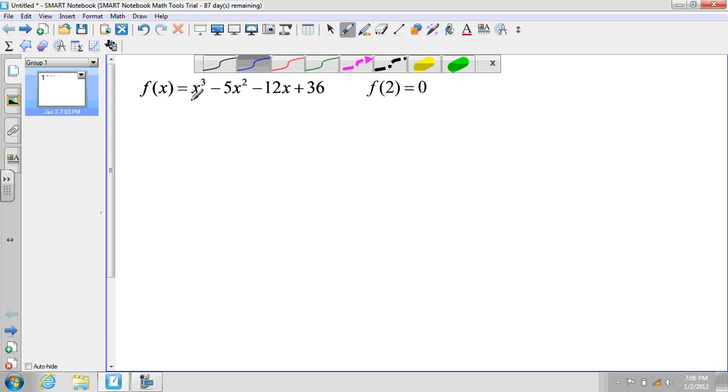So f(x) = x³ - 5x² - 12x + 36. They say that given f(2) = 0, they want me to find the zeros, factors, and solutions of this polynomial.